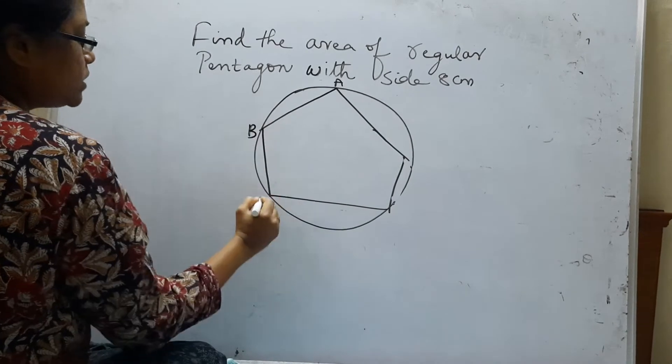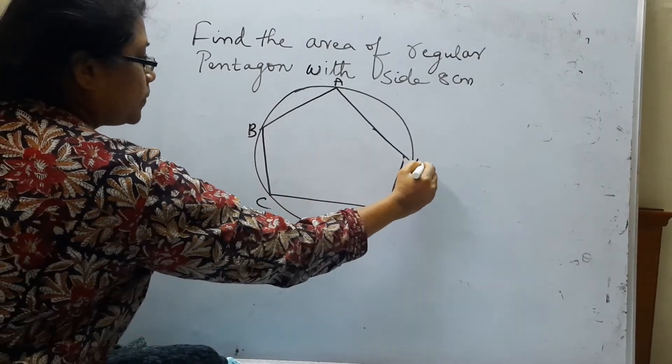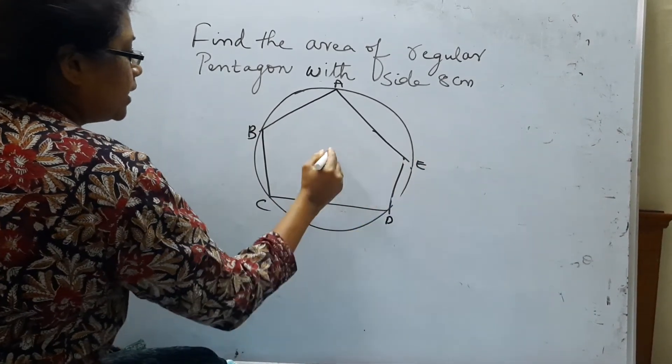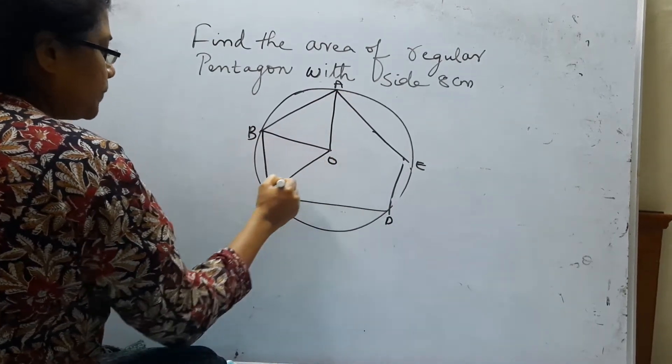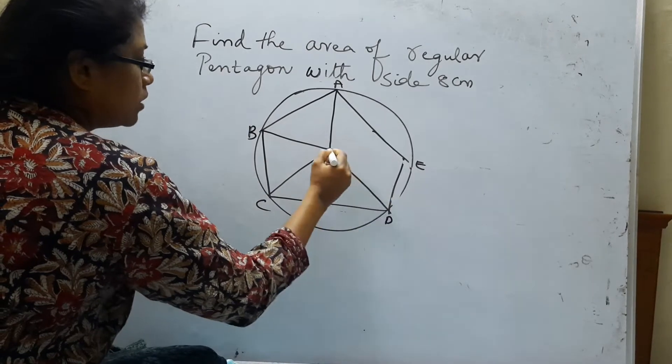Let's name it A, B, C, D and E. I will take the center as O and draw the radius. You know the radius is a line which joins the center to any point on the circle.